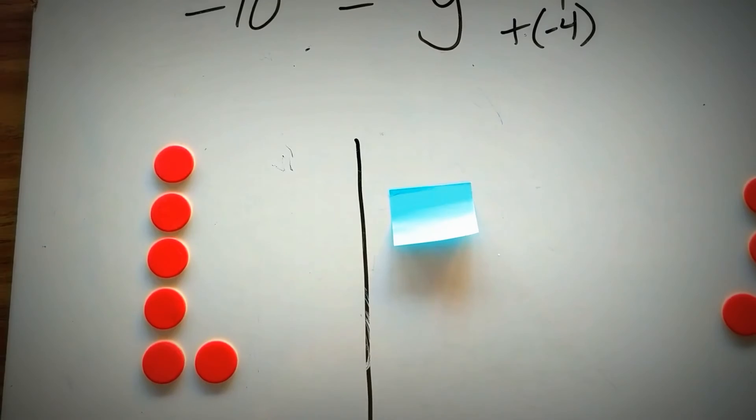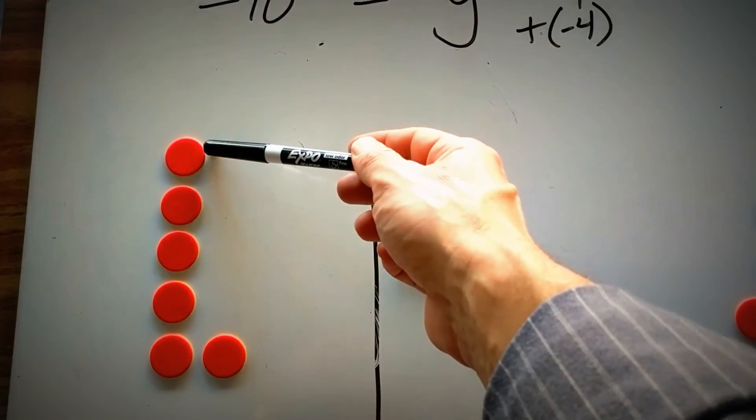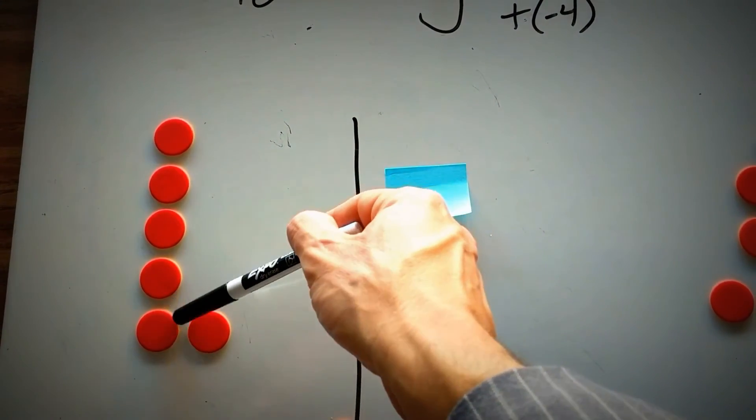And then what is left is going to be the solution. So that will be 1, 2, 3, 4, 5, 6.